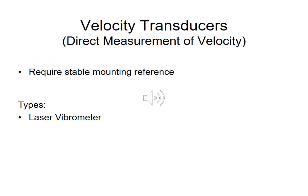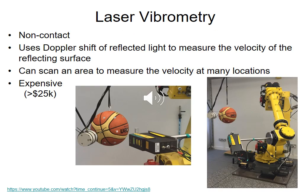Velocity transducers are very useful because they allow us to do direct measurement of the optimum vibration parameter — velocity. These velocity transducers typically make a relative measurement of vibration velocity, so we need a stable mounting reference. The one we will really focus on during the course of this subject is the laser Doppler vibrometer.